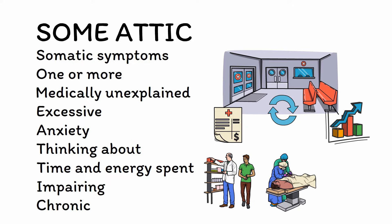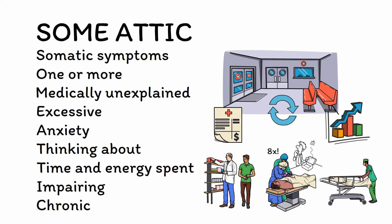People with frequent and severe somatization undergo a median of eight surgical procedures over their lifetime, with procedures on the uterus and gastrointestinal tract being the most common. These surgeries are much more likely to be diagnostically and therapeutically unhelpful, with over 60% of surgeries in persistent somatizers showing no abnormal findings. Because of this, people with persistent somatization are at high risk for iatrogenic injuries, including surgical accidents, complications from anesthesia, medication side effects, and radiation exposure. This makes understanding, preventing, and treating somatization a major personal and public health concern.